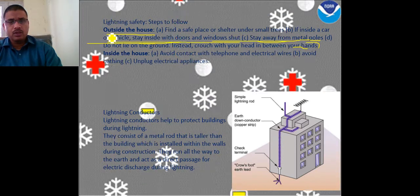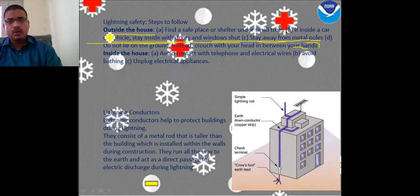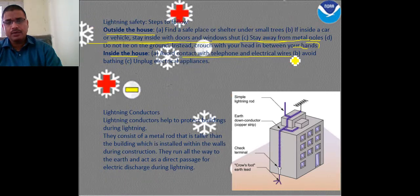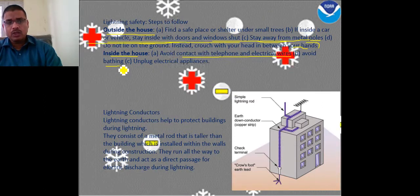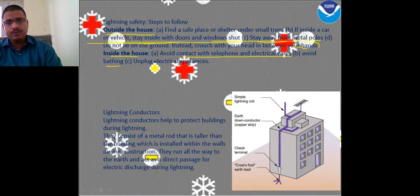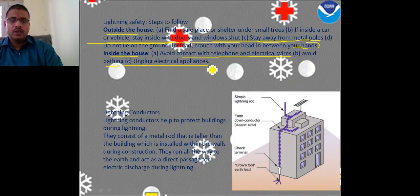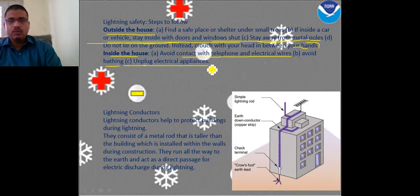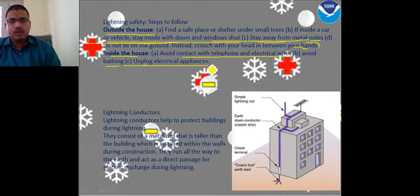Inside the house during lightning, avoid contact with telephone and electrical wires. Avoid bathing during this time, as charges can be transferred through water. Unplug all electrical appliances, because plugged-in appliances attract charges. By following these precautions at home or outside, we can save our lives from lightning.